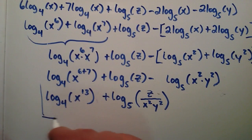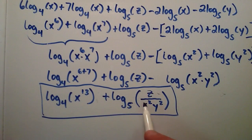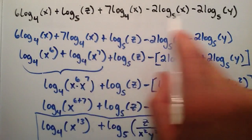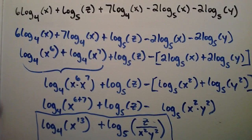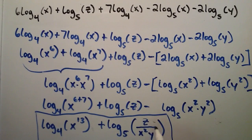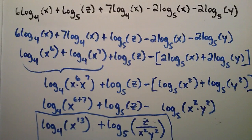And that's our solution. This right here is the exact same thing as what we started with. We were able to use these three properties to condense the entire original expression into just two terms: log base 4 of x to the 13th, plus log base 5 of z divided by x squared y squared. Hopefully that helps you get a better feel for logarithms and how to simplify them.